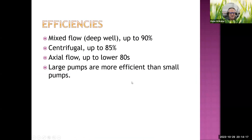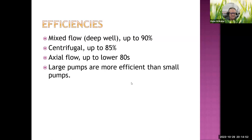Pump efficiencies are mainly dependent on pump size. Large mixed flow pumps used in deep wells can be up to 90% efficient — meaning water horsepower out divided by electrical power in. Centrifugal pumps can reach up to 85% efficiency, and axial flow pumps, where water passes straight through, can reach into the lower 80s.